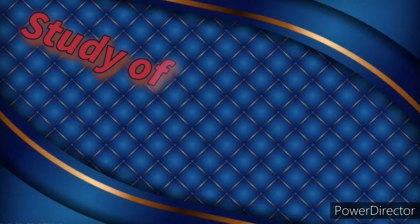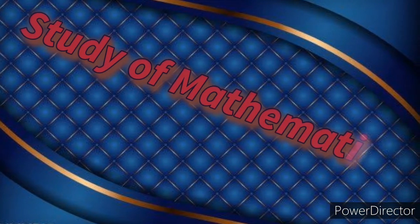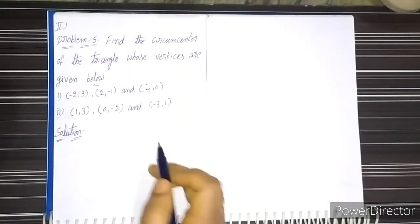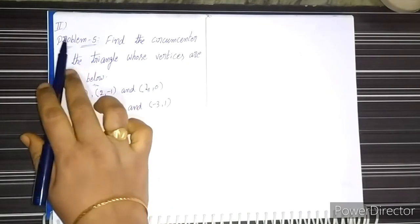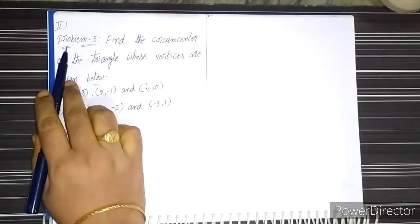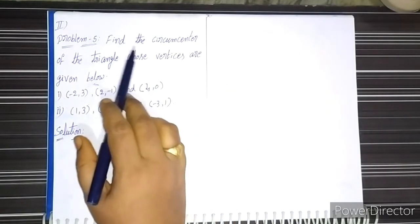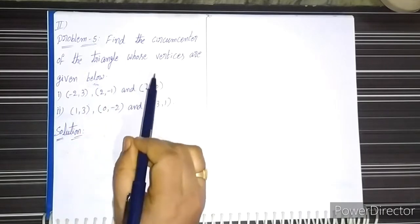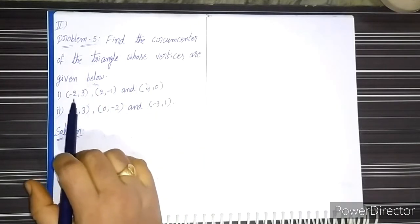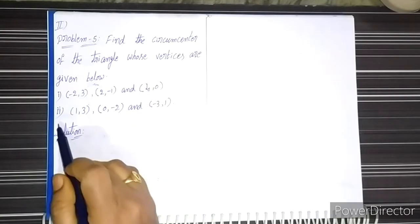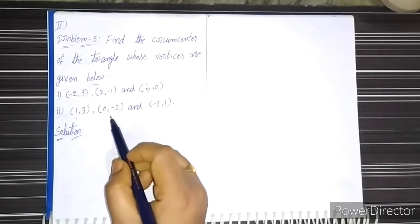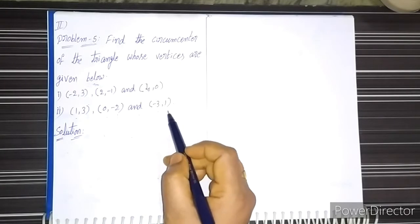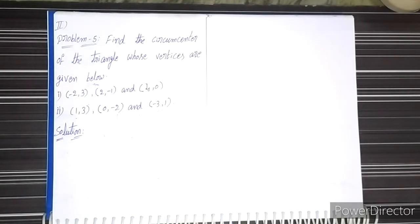Hi, hello friends, welcome to our channel Study of Mathematics. Next we will go to another problem in section 2, problem number 5. The problem is: find the circumcenter of the triangle whose vertices are given below. First problem: (-2, 3), (2, -1), and (4, 0). Second problem: (1, 3), (0, -2), and (-3, 1).